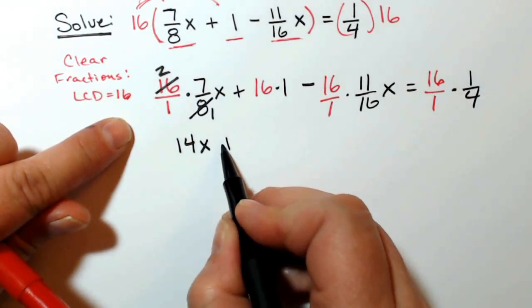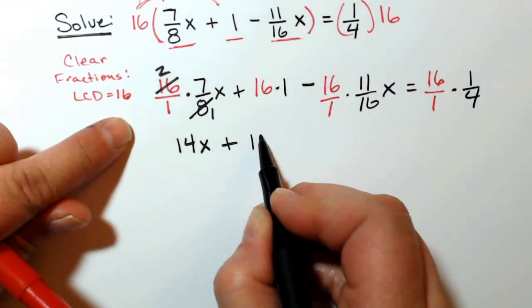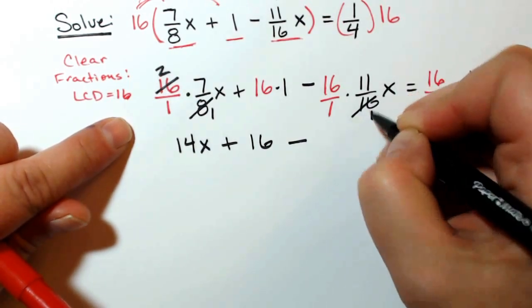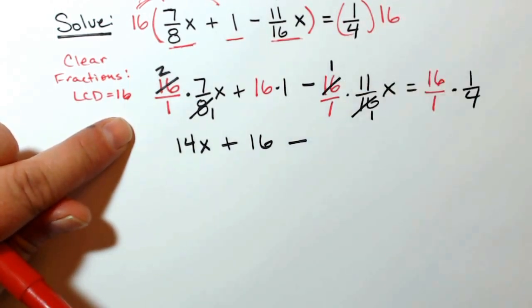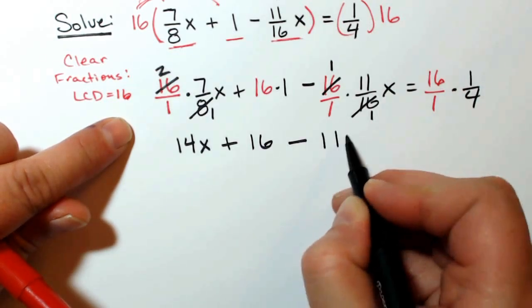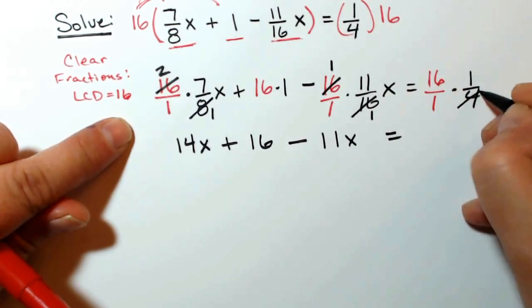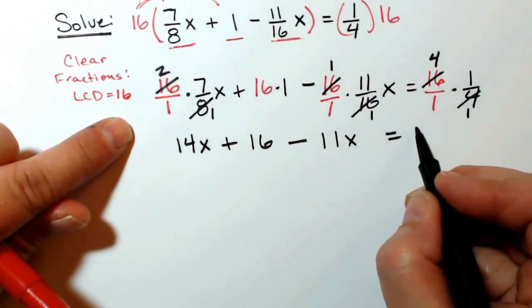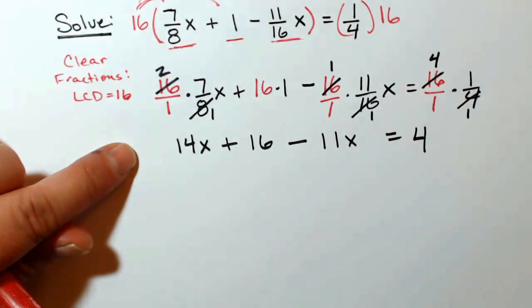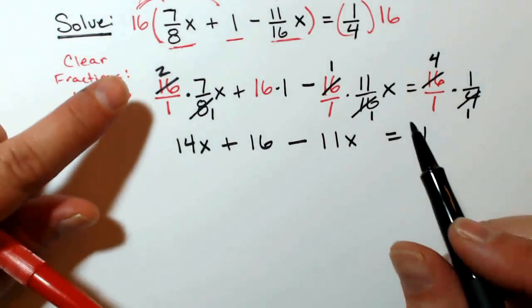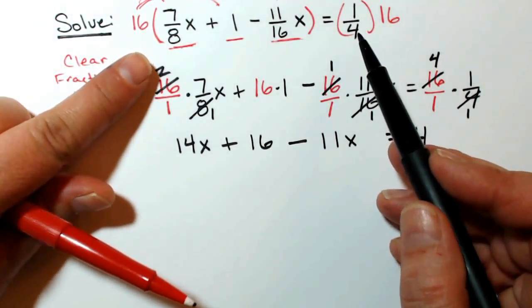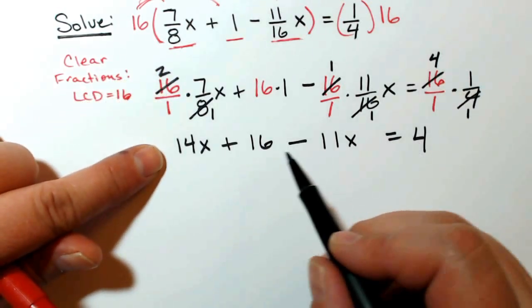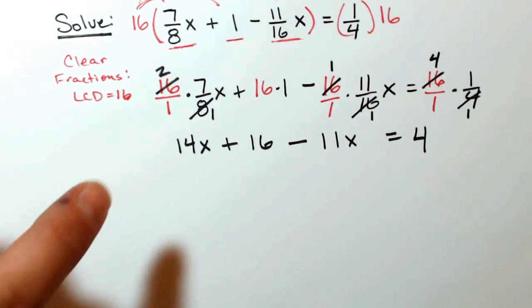cancel the common factor of 16, 11x equals common factor of 4 cancels out there, so I get equals 4. I have now gone from an equation that contains fractions to an equivalent equation that only contains integers as my coefficients and constants.